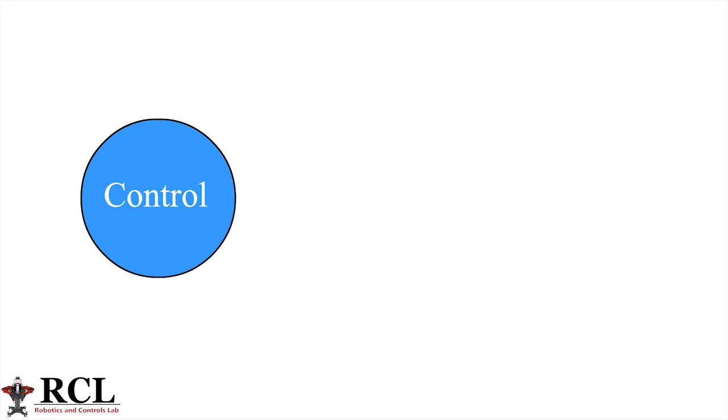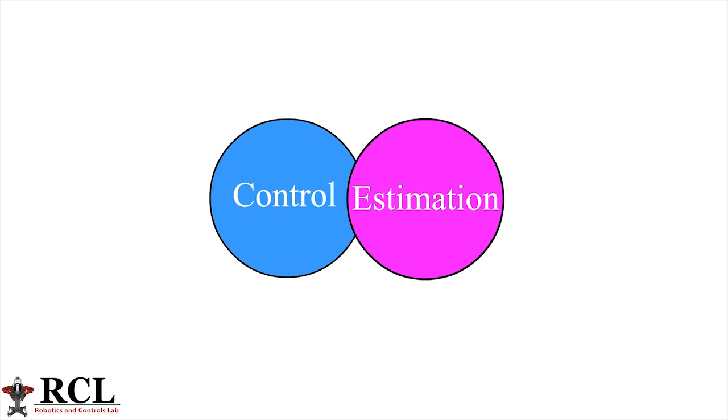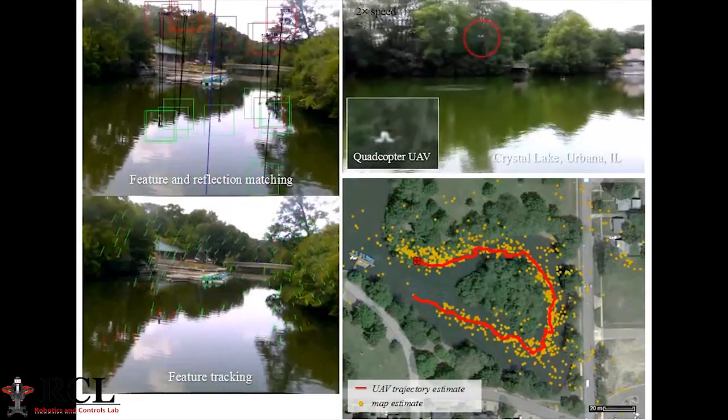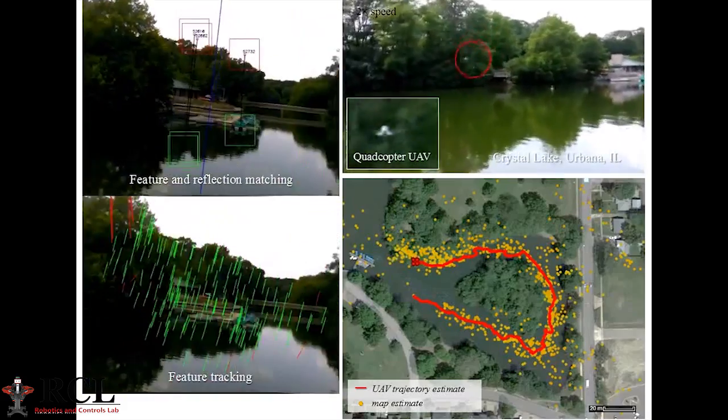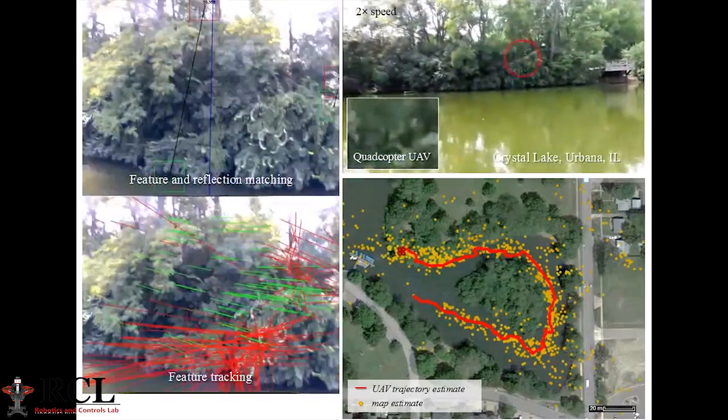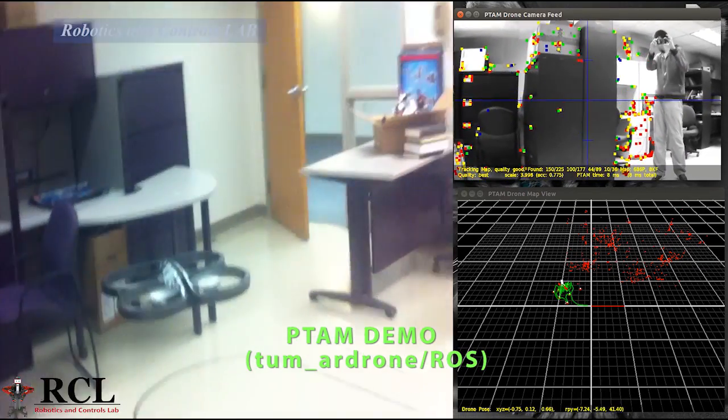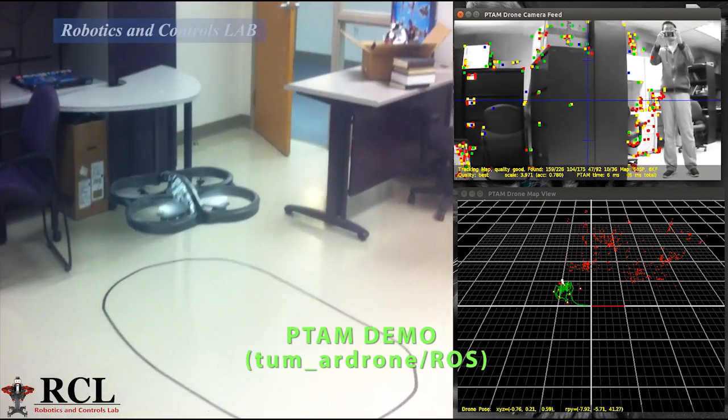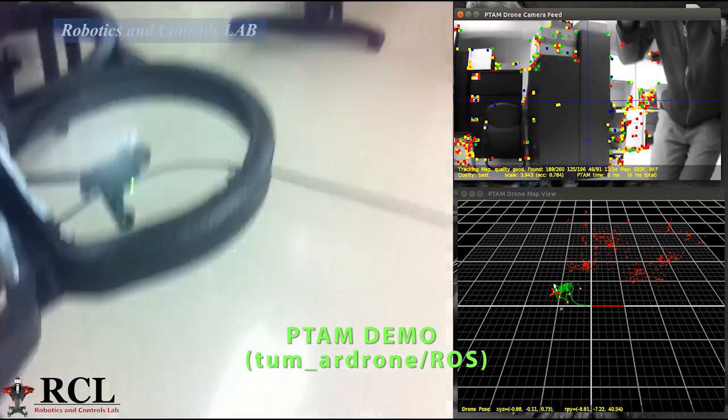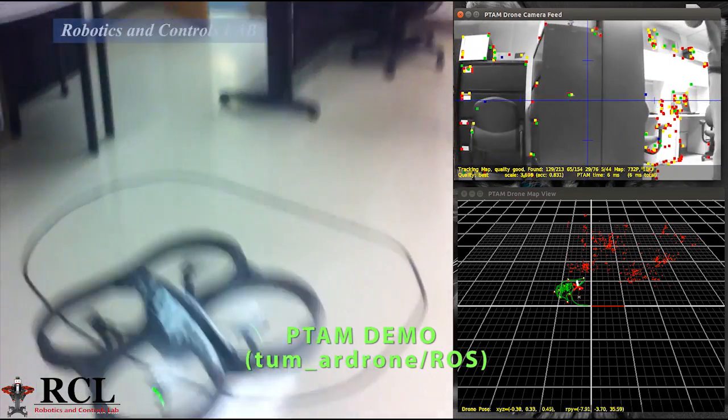A dual to the classic control problem is known as estimation. Often we do not use raw sensor data. We run algorithms on sensor data to estimate the quantities we want to measure. For instance, in an application called simultaneous localization and mapping, or SLAM, we estimate the 3D geometry of the feature points of the environment and the robot's location simultaneously using a 2D camera. And that's how the robot can control its position even though it doesn't have a GPS.